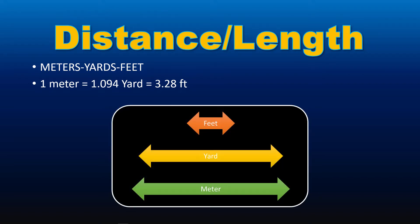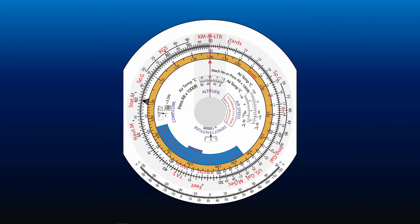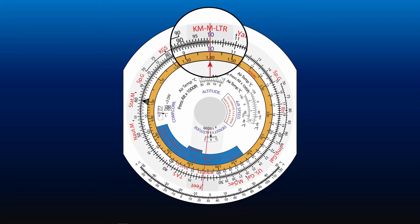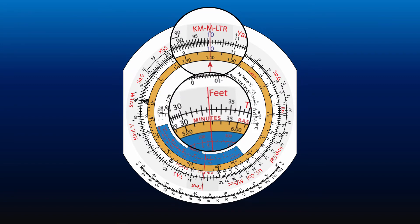The graphical representation of the relationship between these three units is shown on screen. If you have problems memorizing the conversion factor or forget it during the examination, CRP5 can help you remember it. To do this, align 10 on the inner scale with the KM-M-LTR marker on the outer scale — this will represent 1 meter. Next, locate the feet marker, align the cursor with it, and read the factor on the inner scale: 3.28 feet.